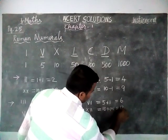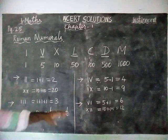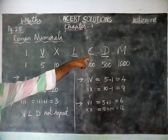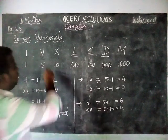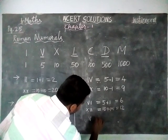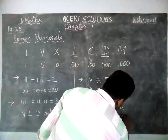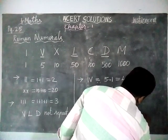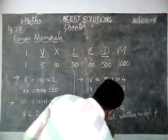And here also, V, L, and D will not come on the left-hand side of any number. V, L, D are not written on the left-hand side of a greater value.